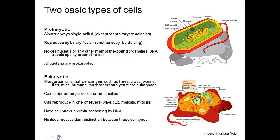Eukaryotic cells reproduce in one of several ways — it could be meiosis or mitosis. It's not binary fission, though; binary fission is specific to prokaryotic cells. They do have a nucleus to package up the DNA, and also other structures that have membranes around them as well.